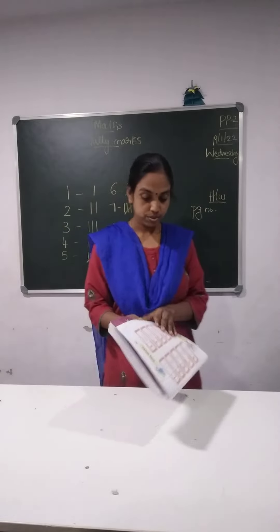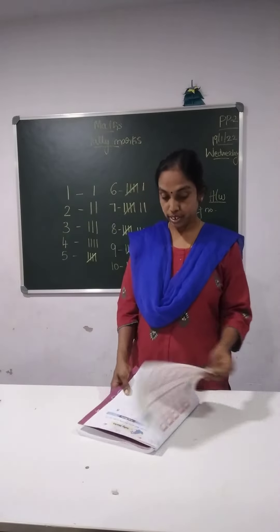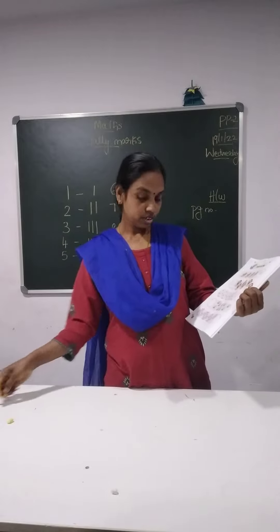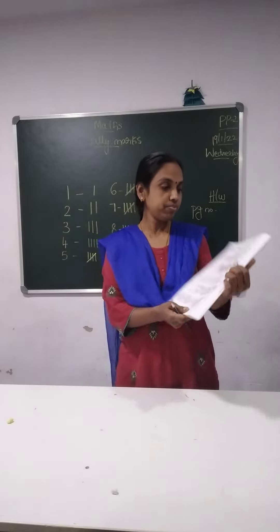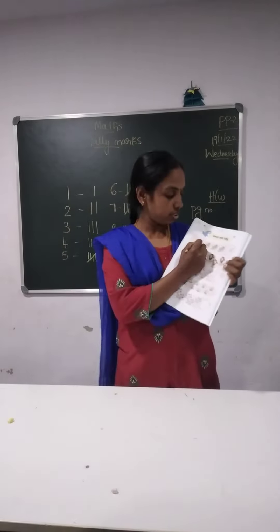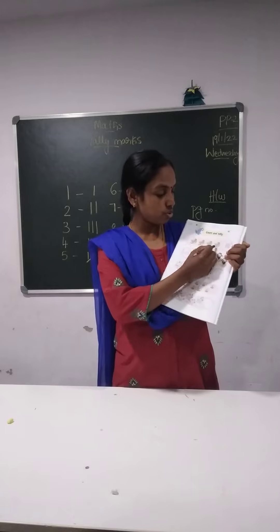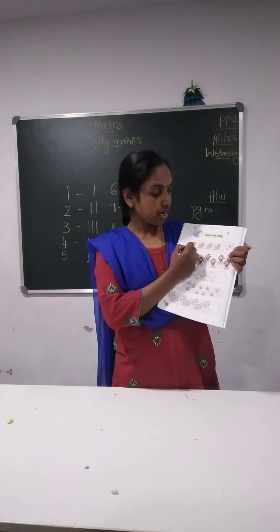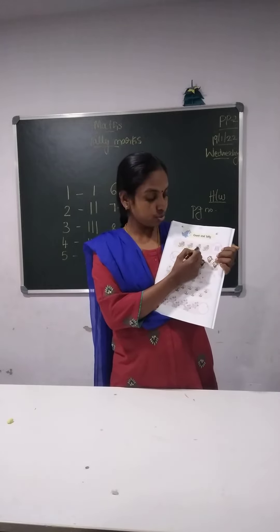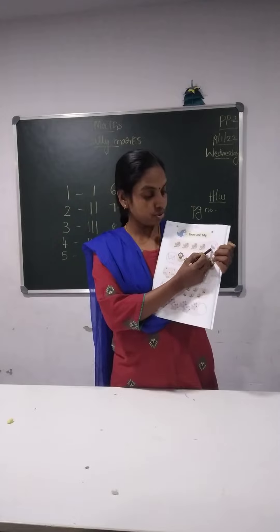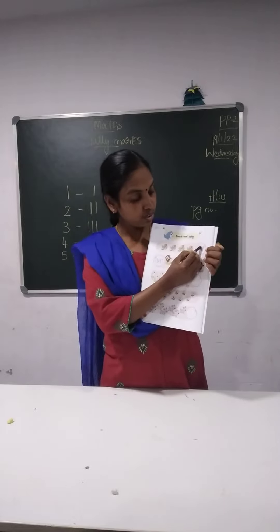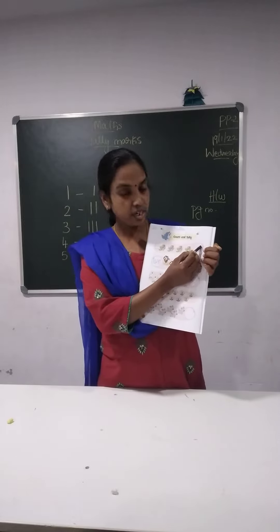Now turn to next page. We have to count tally. Here it is 4 — we have 4 birds. 1, 2, 3, 4. So here we have 4 lines — 1, 2, 3, 4.